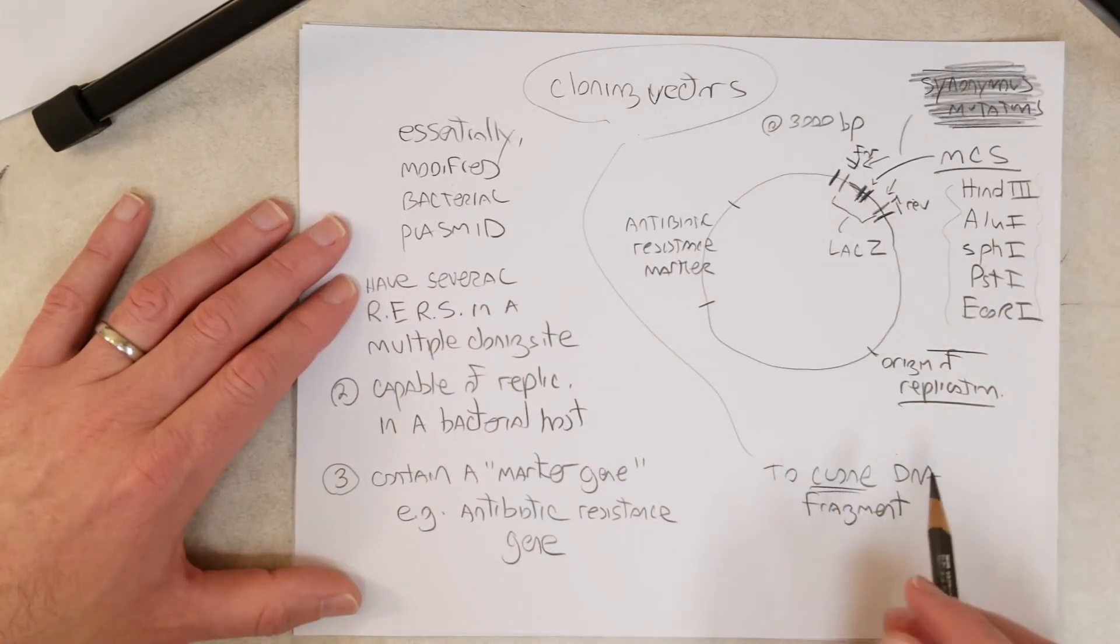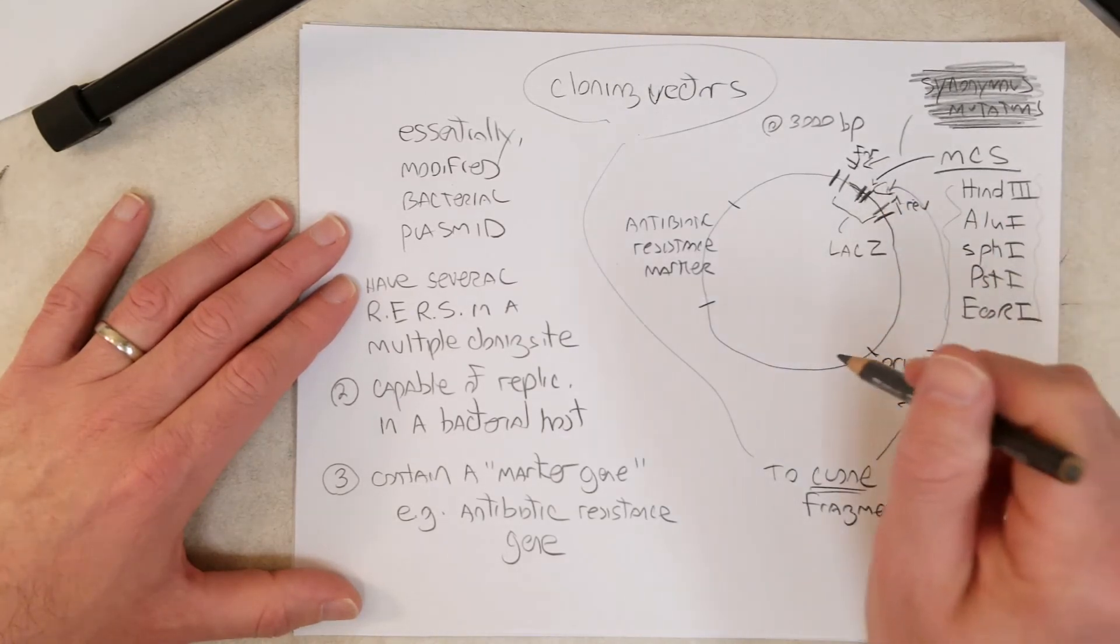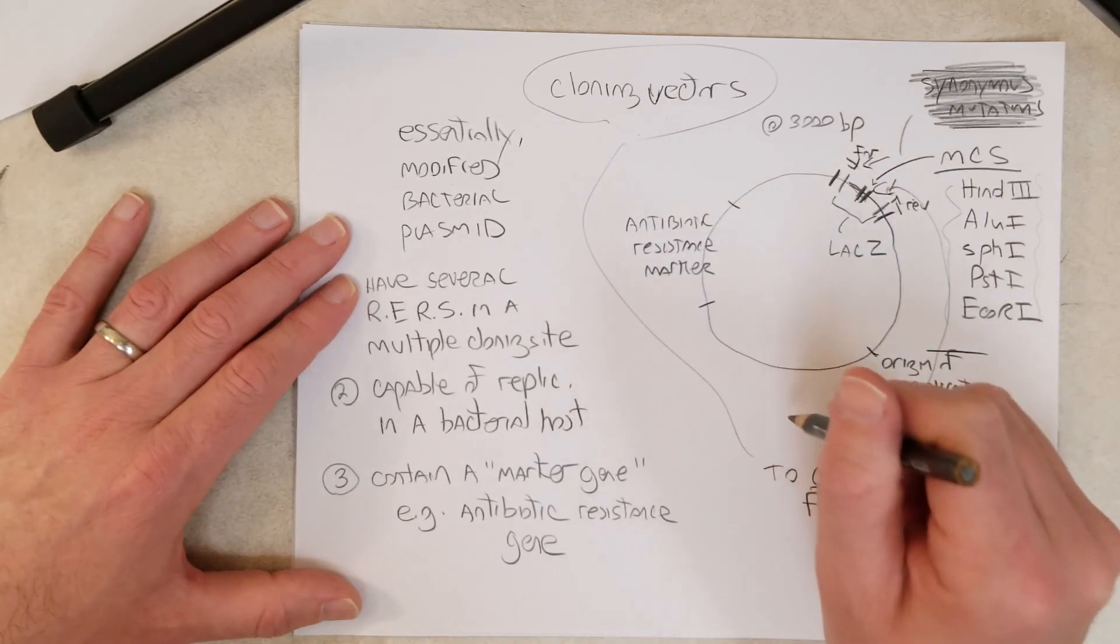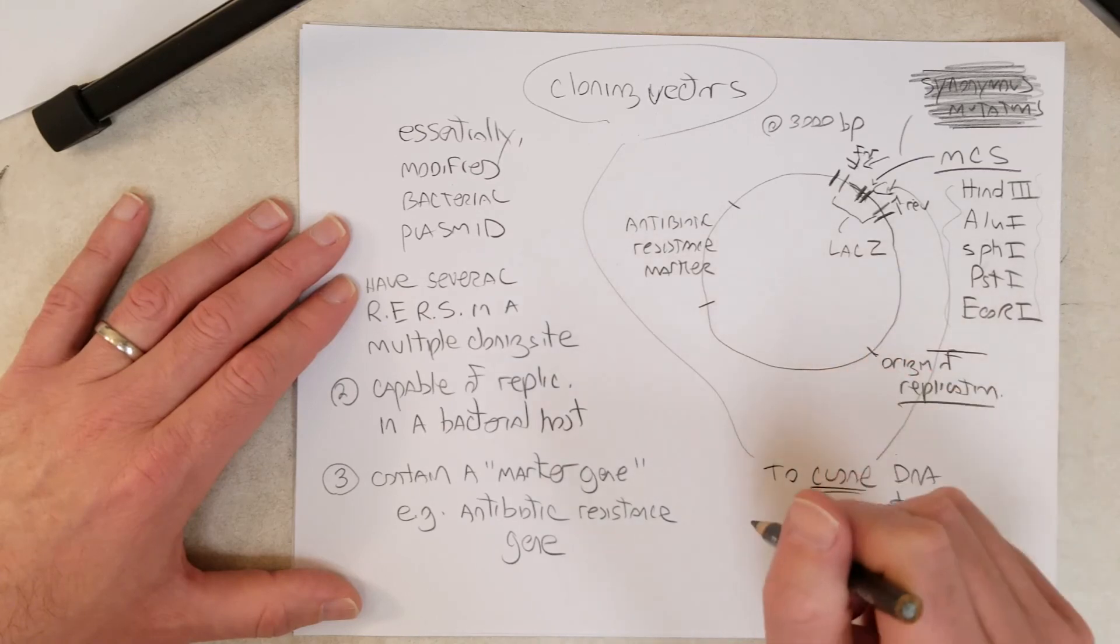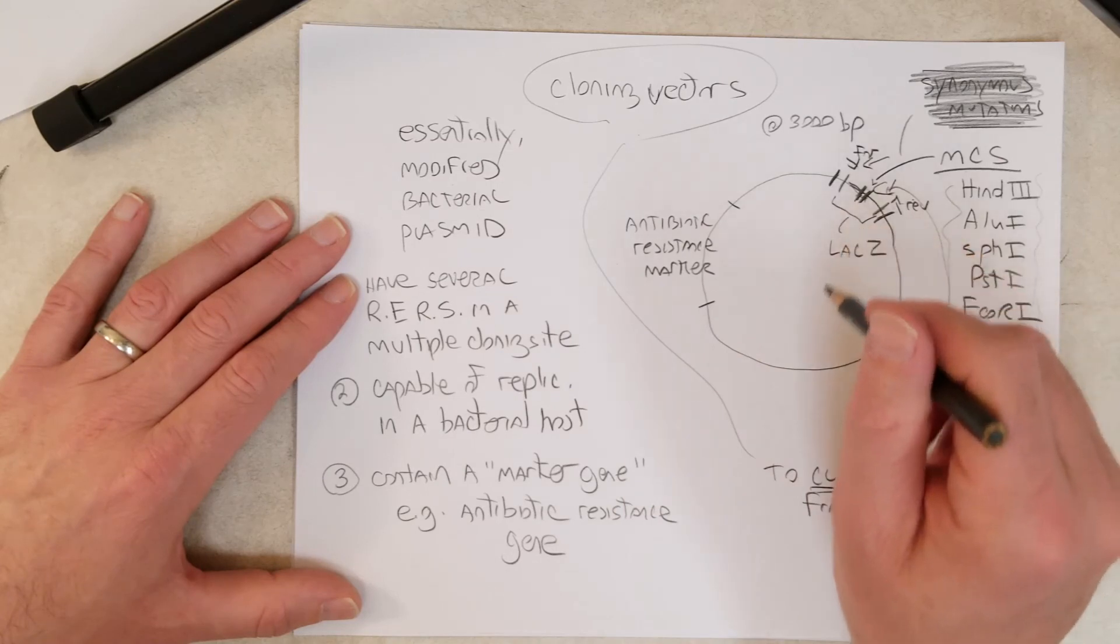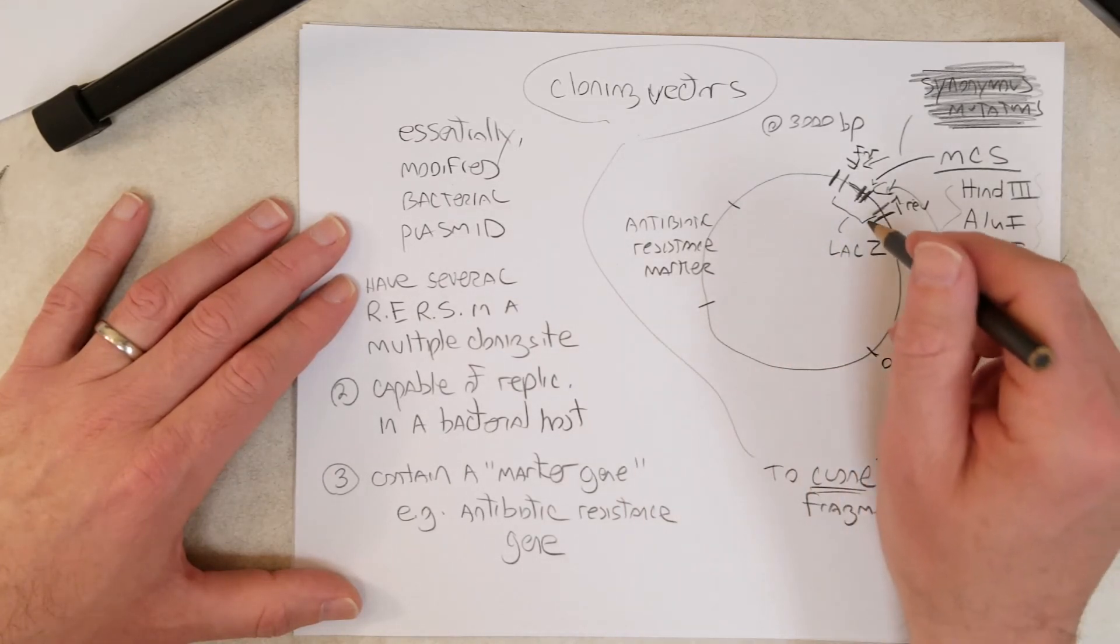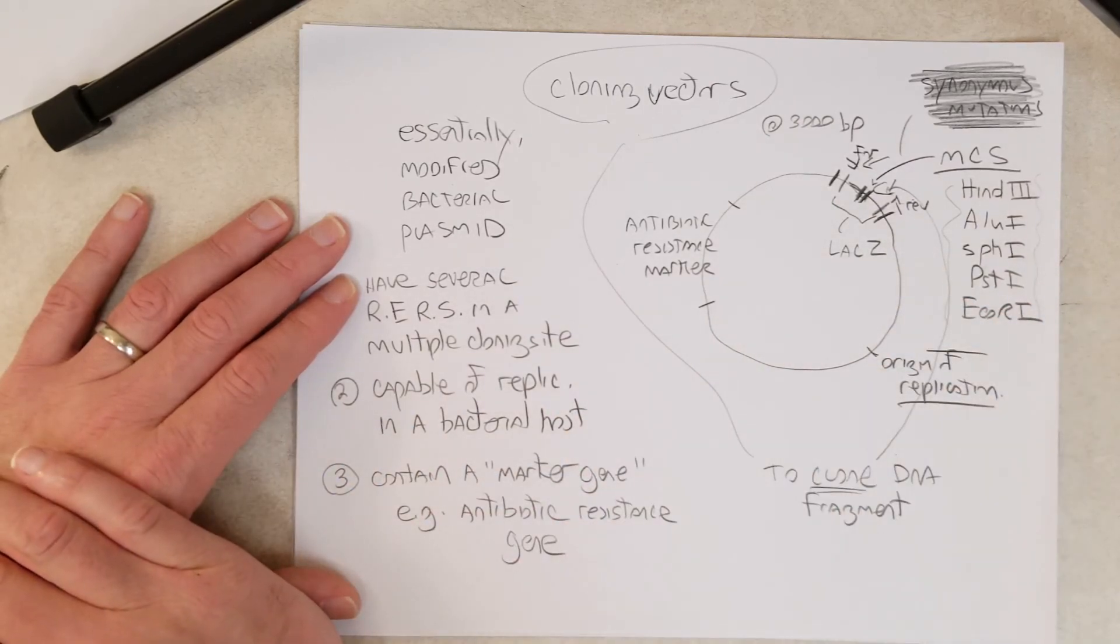To clone means to take the DNA fragment, stick it into the multiple cloning site, and then put that recombinant DNA molecule, where recombinant DNA molecule means a DNA molecule containing DNA from two sources, put that recombinant plasmid inside the bacterium, and the bacterium will use the origin of replication to make many, many copies of that plasmid for you.